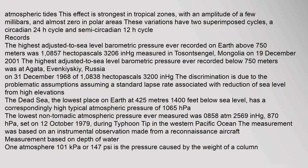Atmospheric tides: This effect is strongest in tropical zones, with an amplitude of a few millibars, and almost zero in polar areas. These variations have two superimposed cycles, a circadian 24-hour cycle.